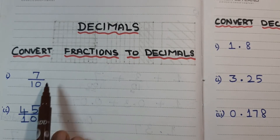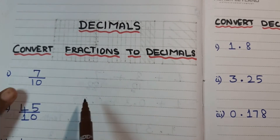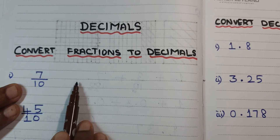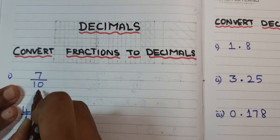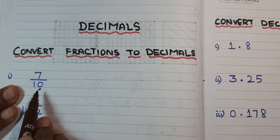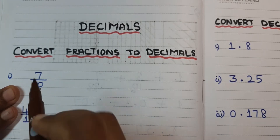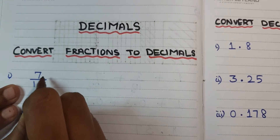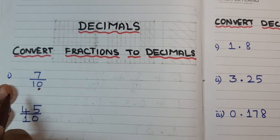What is a fraction? A fraction has a numerator and a denominator. Here I have a fraction format and I am going to change it into decimal format. Seven by ten — see here, how many zeros? Only one zero. One zero means you have to keep the decimal point one digit before.